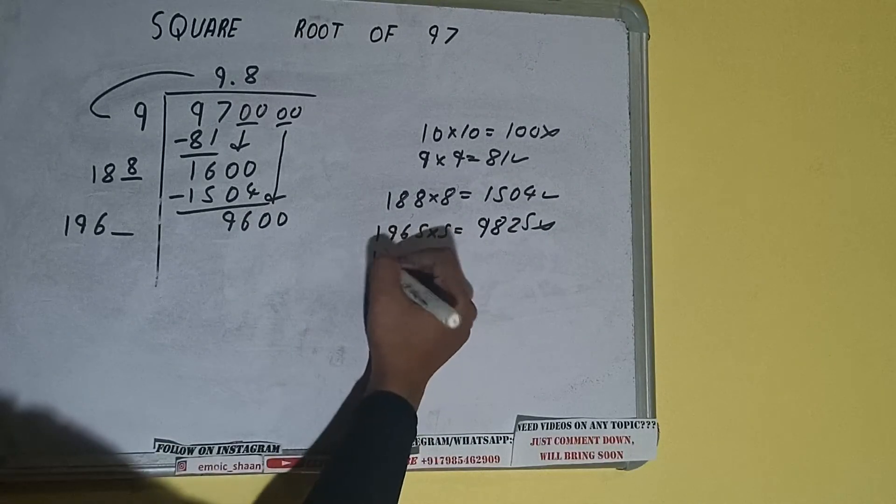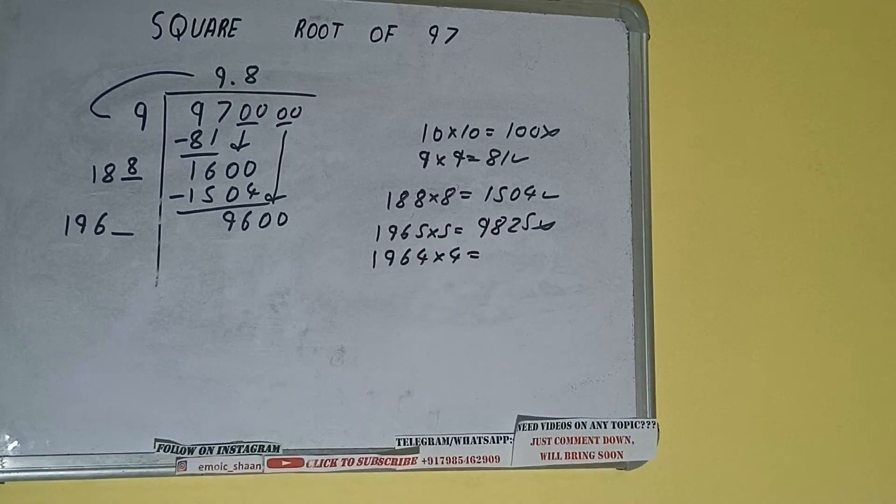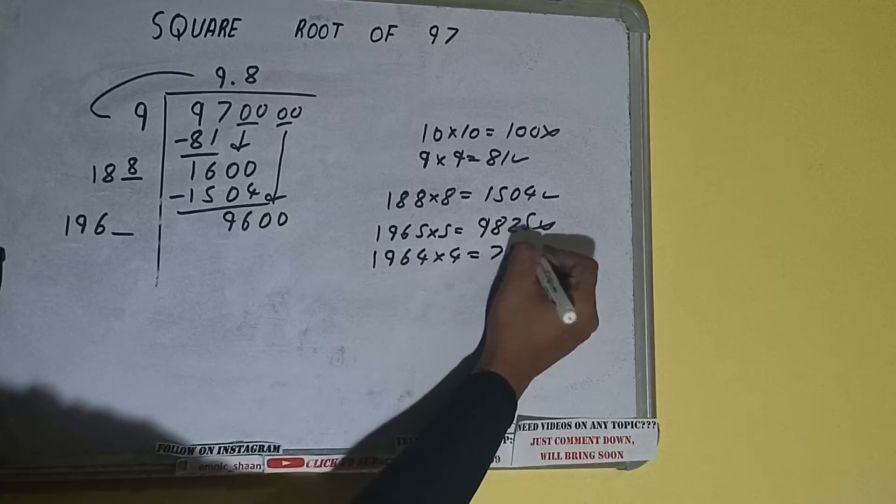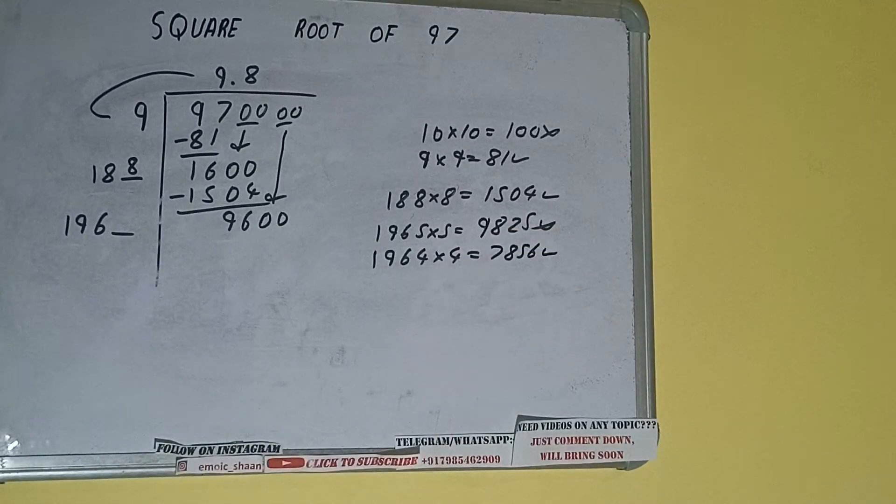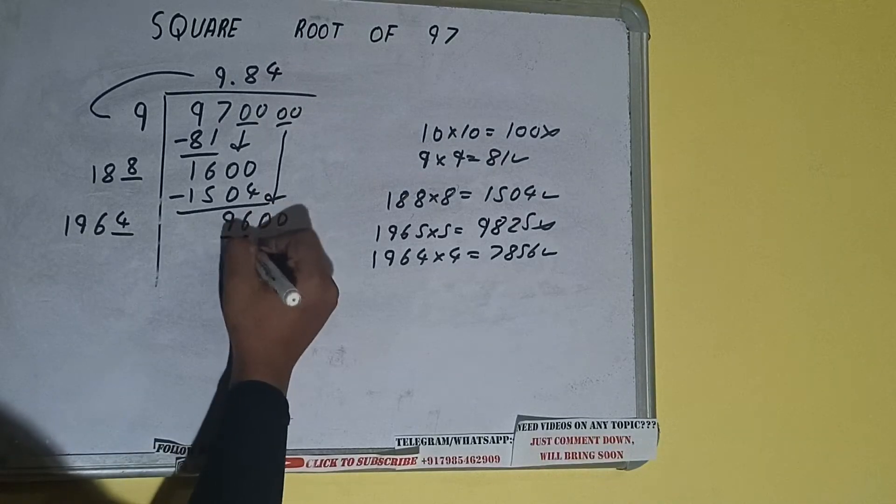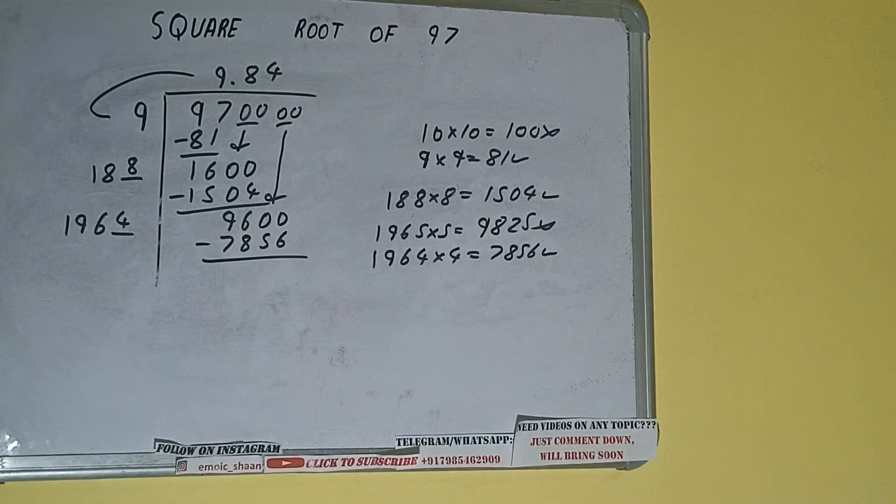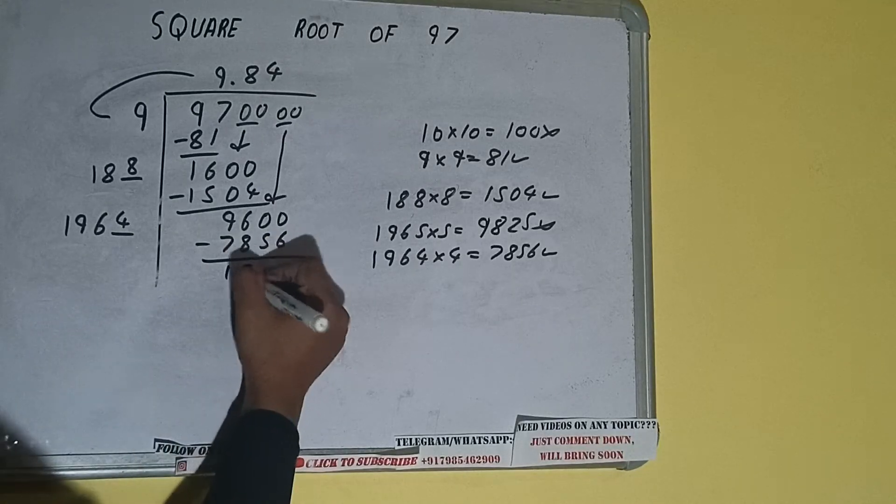Let's try 4 times. 1964 into 4 we can try, and we'll be getting 7856, which is good to take. So 4 here and 4 here, 7856 subtract, and we'll be left with 1744.